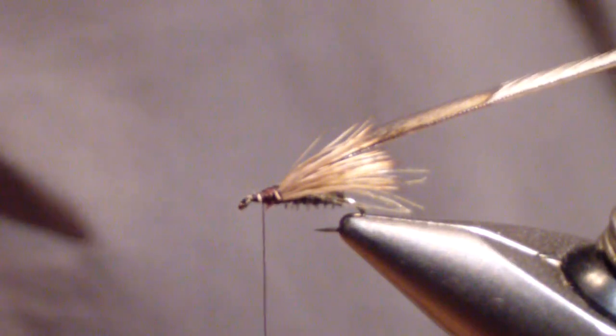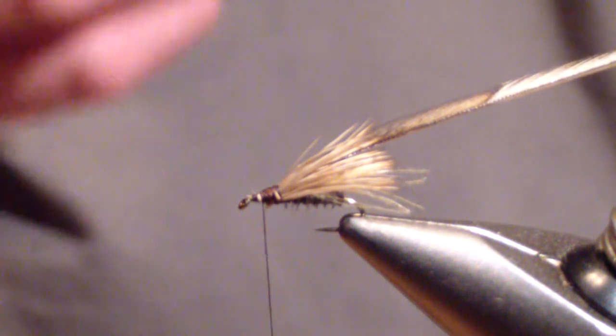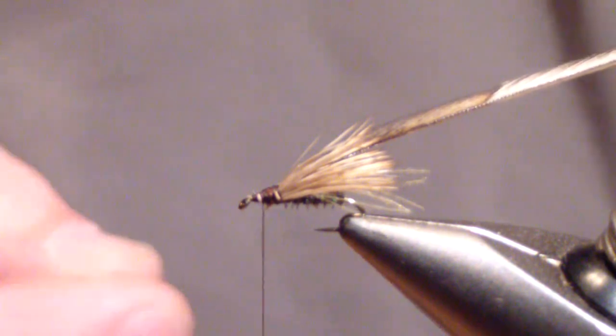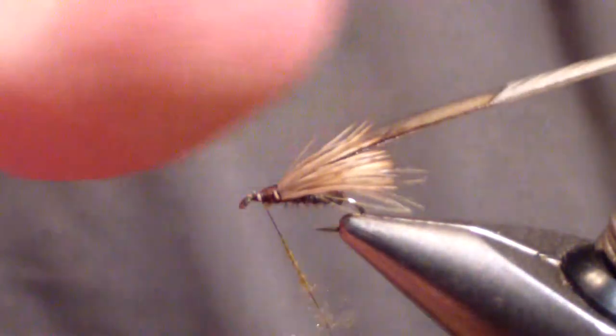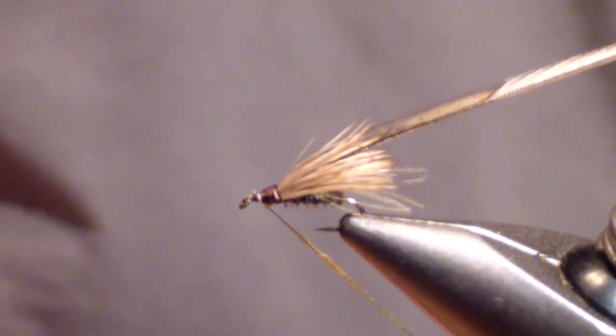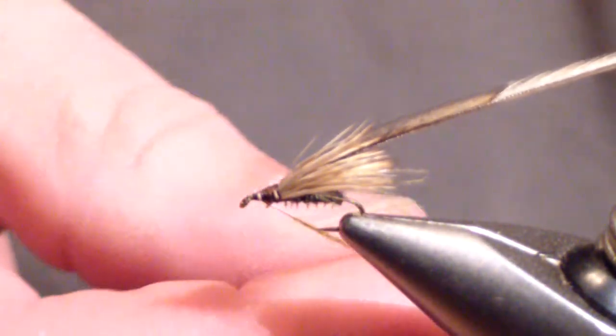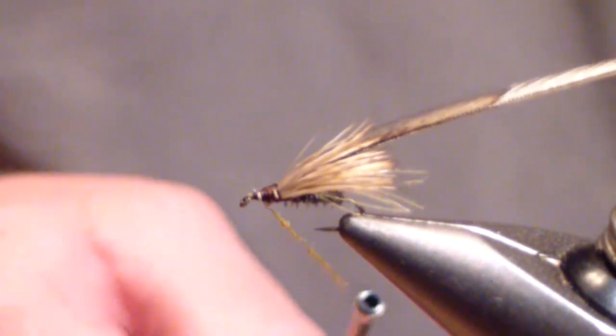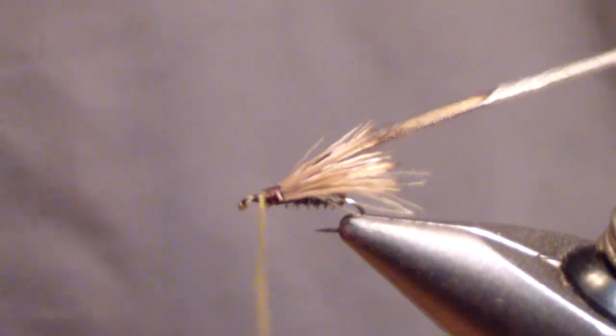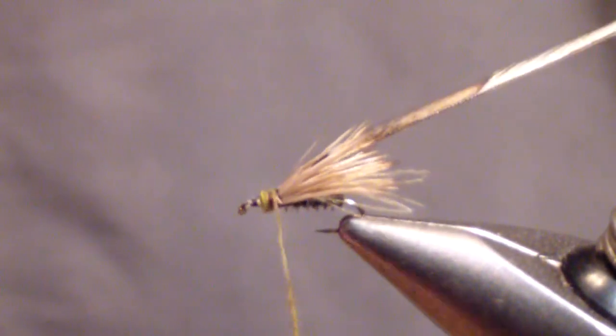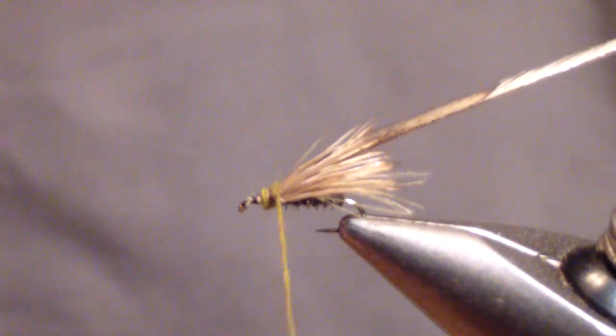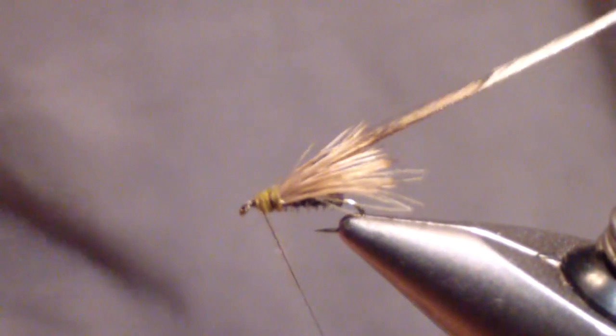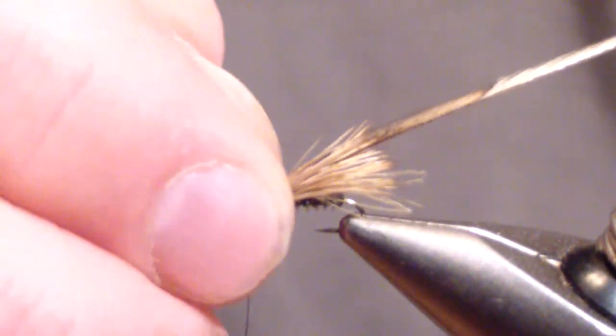Then you're going to dub your thorax. I use one size smaller than the hook because you're building a little bit of a thorax. Whenever you're tying a pattern where you're building up the thorax, you want to downsize your hackle. Otherwise your hackle will come out looking extremely large, because the diameter of your hook got bigger at the head. When I taper the thorax, I start towards the eye, then I'll bring it back down towards the eye and my tie off point.